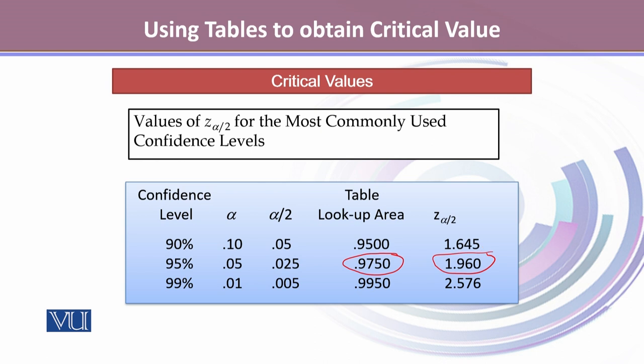Whenever we carry out the test of hypothesis or we are conducting interval estimation of an estimator that follows a normal probability distribution, for alpha that is 0.05, the critical value will be 1.96 for two-tailed test or two-sided interval estimate.